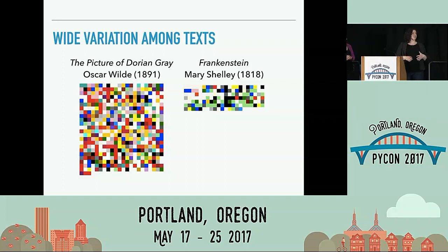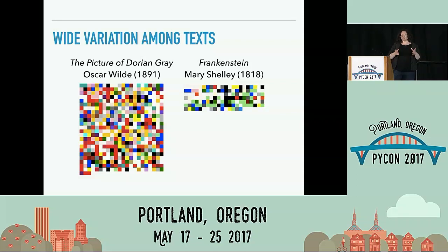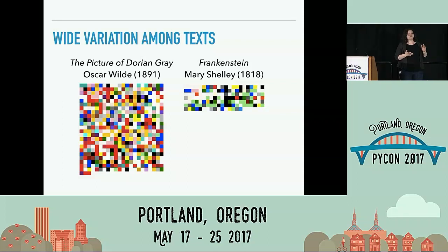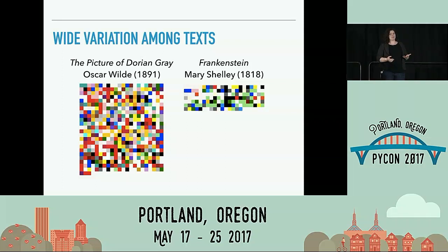One of the first findings we had was that there was a very wide variation between the texts, which was not necessarily something we were expecting. Here you can see the two color profiles for two different novels — The Picture of Dorian Gray and Mary Shelley's Frankenstein. They're approximately the same length. You can see in The Picture of Dorian Gray there's a much wider variety of colors being used — the palette is much richer. There's also a different look and feel to the two palettes. Dorian Gray has a wider variety of color and it's a little bit brighter, whereas Frankenstein is actually very green, which was again not something we were necessarily expecting.